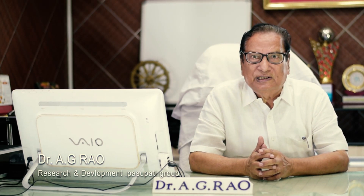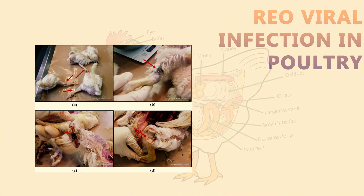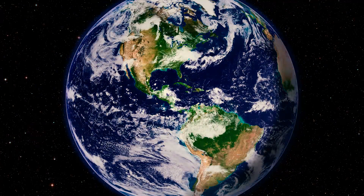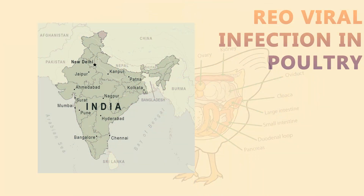Namaskar. Today's topic is Reo Viral Infections in Poultry. Reo Viral Infections in Poultry are caused by single-stranded RNA virus belonging to the Reoviridae family. These infections occur worldwide, including in India, and the viruses cause very different disease conditions.